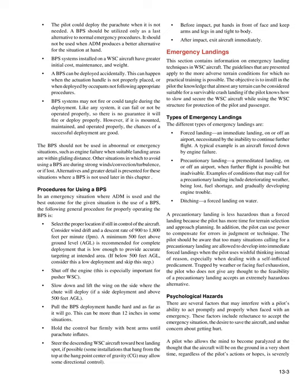Procedures for using a BPS: When ADM determines the best outcome is the use of a BPS, the general procedure is as follows. Select the proper location if still in control of the aircraft. Consider wind drift and a descent rate of 900 to 1,800 feet per minute (FPM). A minimum 500 feet above ground level (AGL) is recommended for complete deployment that is low enough to provide accurate targeting. If below 500 feet AGL, consider this a low deployment and skip this step. Shut off the engine — this is especially important for pusher WSC.